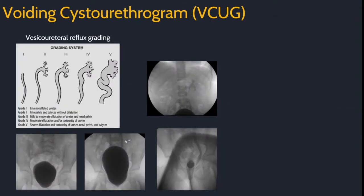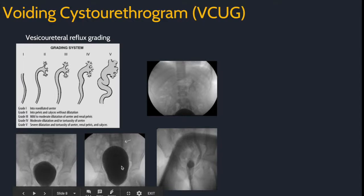Voiding cystourethrograms (VCUGs) are also a main fluoroscopy responsibility for a pediatric resident. Contrast fills the bladder via a catheter as you watch it fill. The main question is: is there reflux, and what grade is the reflux? Use this grading system to answer those questions. Here are representative images of a VCUG with bladder filling, bilateral reflux, and grade 3 reflux.